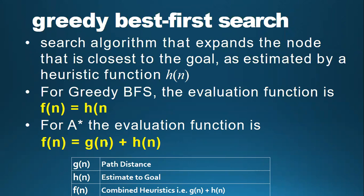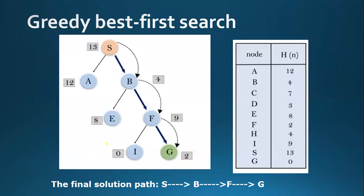There are two variants of the best-first search: the greedy best-first search and the A* search. The greedy best-first search algorithm selects the path which appears to be the best. It can be known as a combination of depth-first search and breadth-first search. Greedy BFS makes use of the heuristic function and allows us to take advantage of both algorithms.